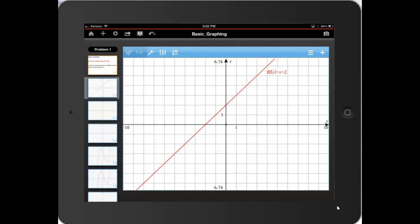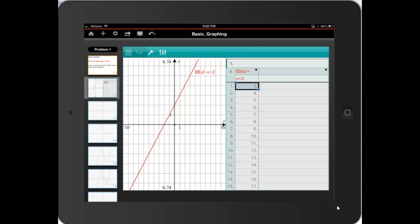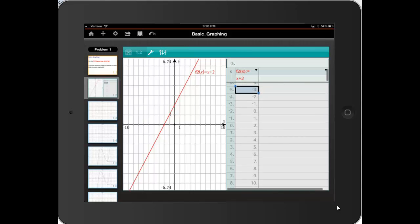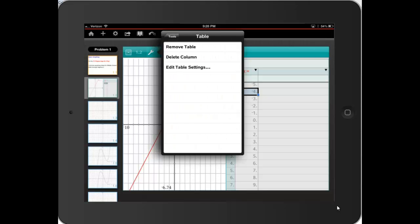I can also have a table. So I'll go to the wrench and press the table and split screen table. There's the table and I can also pull it down so I can see other values. I can remove the table going back to the wrench and remove the table.